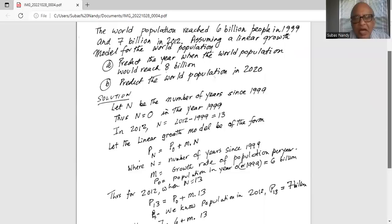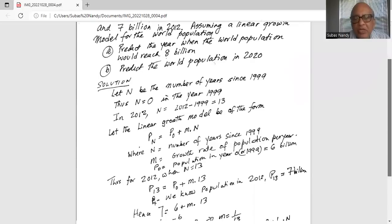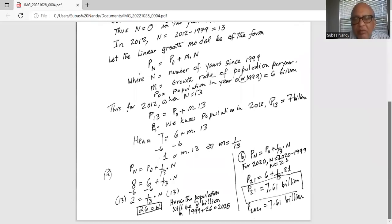Part B, they ask, predict the world population in 2020. So the explicit formula is Pn equals P0 plus 1 over 13 times n. For 2020, n is the number of years since 1999, which is 2020 minus 1999, which is 21.